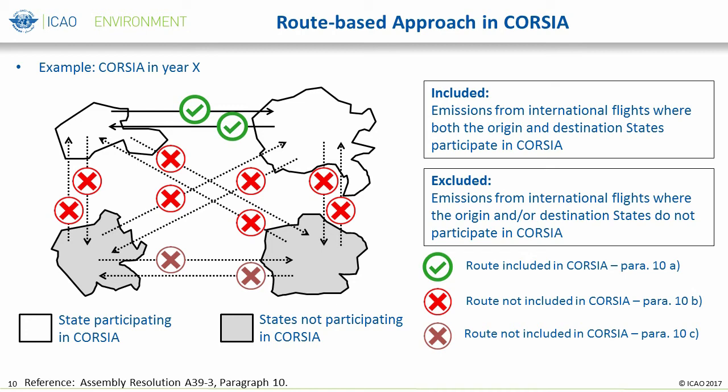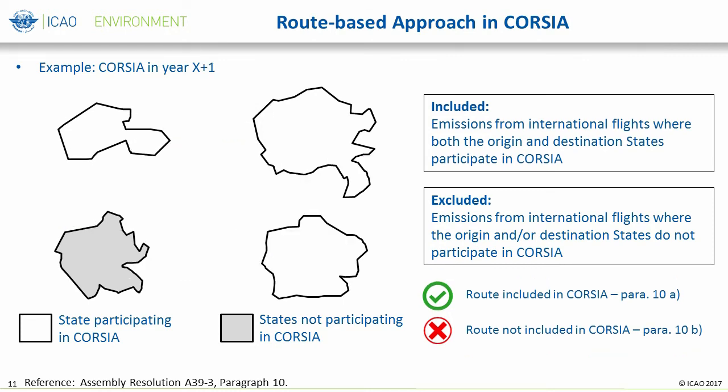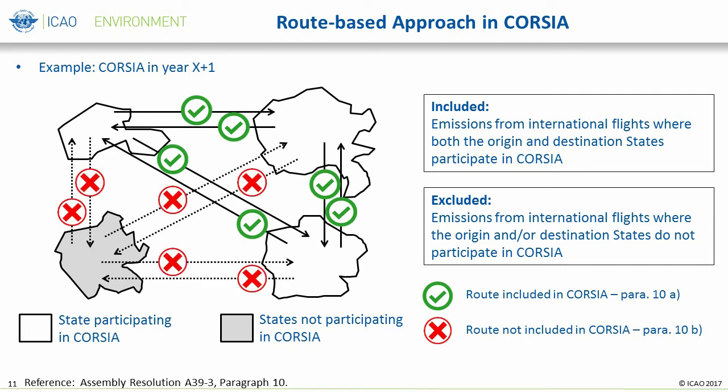It is important to note that routes included in CORSIA means that emissions from those routes would be subject to CORSIA's offsetting requirements. Even if routes are not included under CORSIA's offsetting requirements, the emissions are still to be reported, but not used for offsetting requirements. In year X plus 1, one additional state at the bottom right has decided to participate. The number of covered routes indicated by green checks have now increased, as have the international emissions coverage for CORSIA's offsetting requirements.